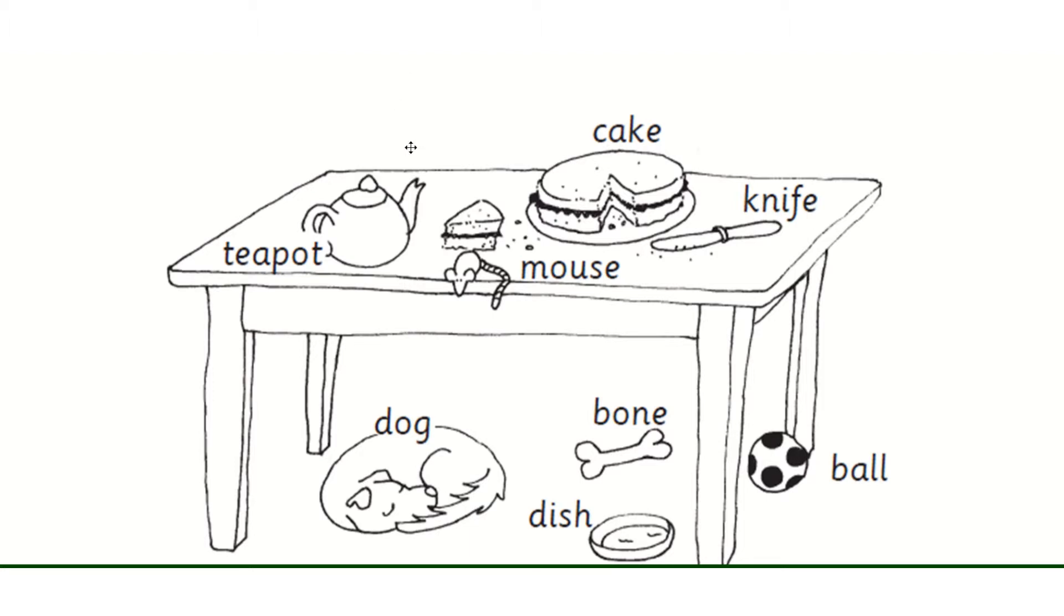On the table I can see a teapot, a mouse, a cake and a knife.